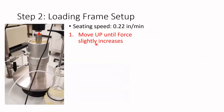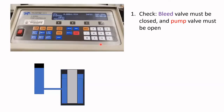We move the frame up until it touches the upper part, which we recognize because the force on the board will slightly increase. Once that is done, we set up the confining pressure for the measurement.